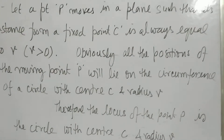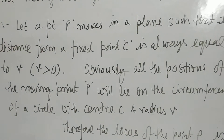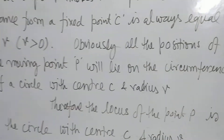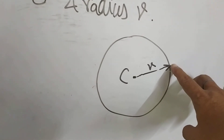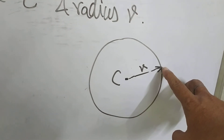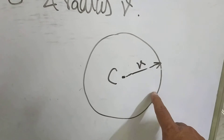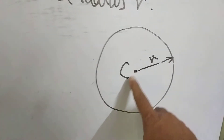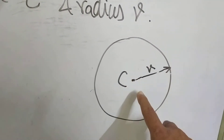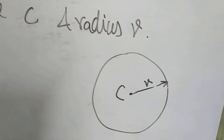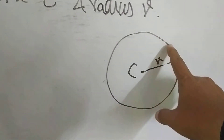Point P moves under the condition that it is always at an equal distance R from fixed point C. Suppose it is here — the distance R is the same at every position. The distance is always R from center C to that point. So the locus of point P is nothing but the circumference of this circle.